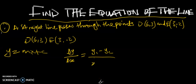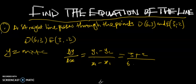Let's substitute our values. y1 is 3, minus y2 which is negative 2 — so negative negative becomes positive 2 — divided by x1 which is 6, minus x2 which is 3. This gives us 5 over 3, because 3 minus (-2) = 5 and 6 minus 3 = 3. So the slope is 5/3.